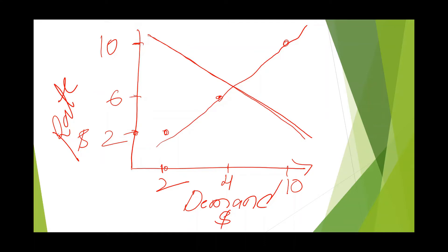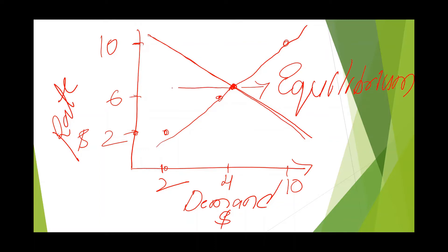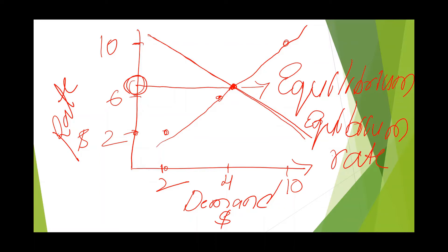The point where both the demand and the supply curves intersect is the equilibrium point. The corresponding rate at that intersection is the equilibrium exchange rate. This is how the exchange rate is determined in the spot market based on the demand and supply of foreign currency.